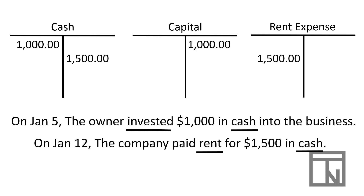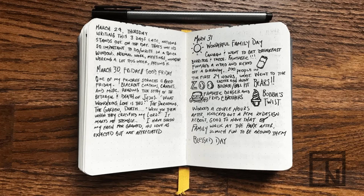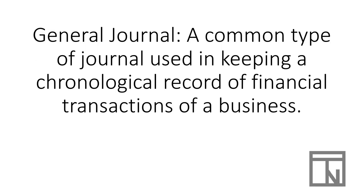We've now walked through the analysis process for each of these two transactions and are ready to move to step two: recording these as journal entries. When we think about journals, we usually think of written records of daily events in our lives. In business, accounting is the language of business — everything is written in numbers, but the concept is the same. A journal is simply a chronological record of daily financial transactions and activities in a business. The most common type is called a general journal, where pretty much every transaction is recorded in chronological order by date.